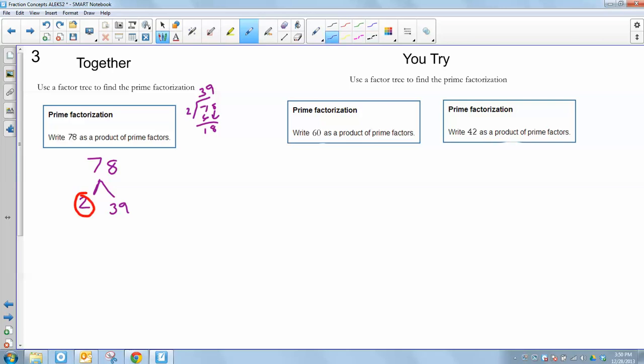Now my 39, let's see. I know that if I add those numbers up, the sum is going to be a 12. So I know it's divisible by 3. So 3 times what is 39? How about 3 times 13 is 39. 3 is a prime number. 13 is also a prime number.